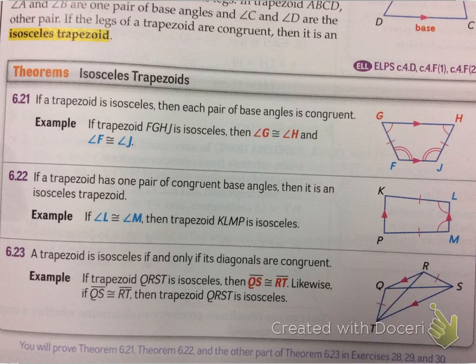the base angles, the ones next to each other side by side, are considered congruent. Basically, in other words, the ones on each base.